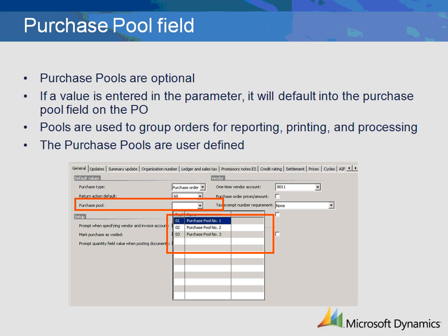Purchase pools are an optional setup within Purchasing Master data and are used to categorize, sort, and report different types of purchases being made. These table values are user defined, meaning they will be set up for the way your company does business. Within this parameter form, this is asking for a default value that will automatically populate on the purchase order. You first should decide if you will use purchase pools, then decide if it is appropriate to have a default value. If you do not choose a default, the purchase pool field can be populated when the order is created.